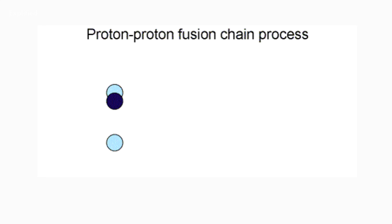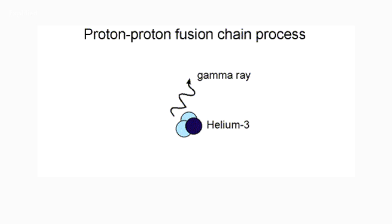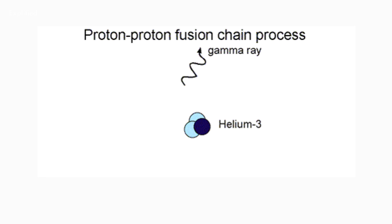After this, the deuterium nucleus will combine with another proton to form an isotope of helium — this is helium-3. Aside from this isotope, a gamma ray is also formed, which leaves the core of the sun and is released as sunlight.